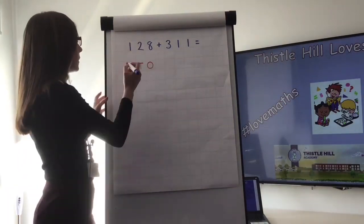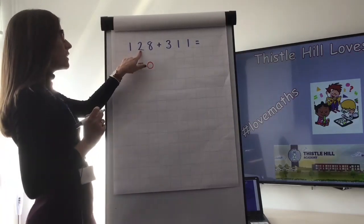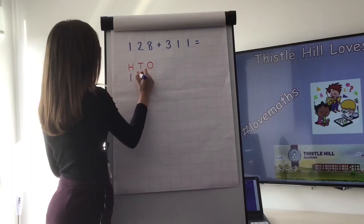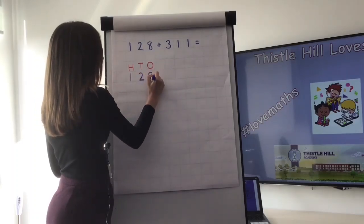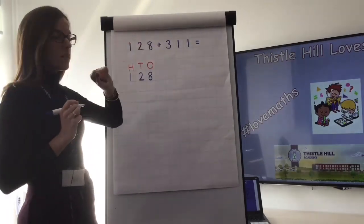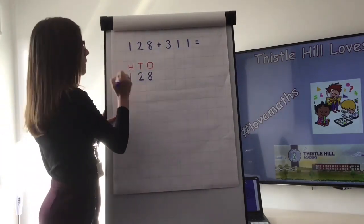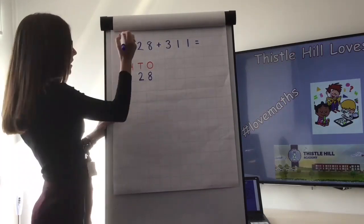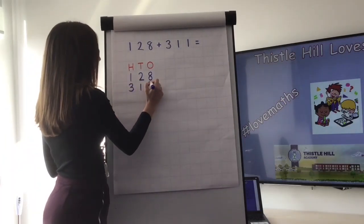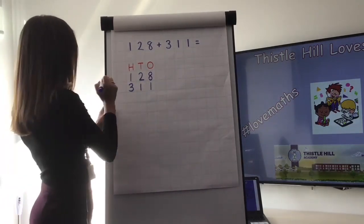We're going to take our first number and line it up underneath our hundreds, tens, and ones. We've got 128, so under hundreds, tens, and ones we write 128. Then we look at the number we are adding, which is 311, and we line that up with our hundreds, tens, and ones.